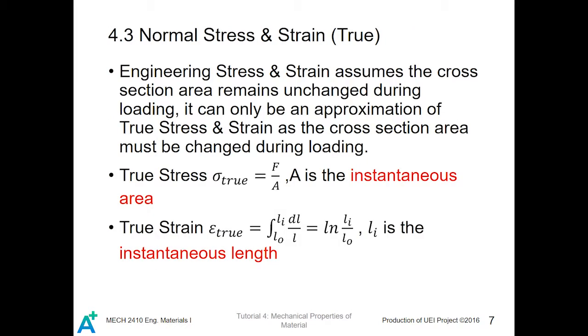Negative force direction and stress assume the cross-sectional area remain unchanged during loading. But it can only be an approximation of the true stress and strain, as the cross-section area must be changed during loading. And we define true stress, which is sigma true is equal to F over A, and A is the instantaneous area during loading.